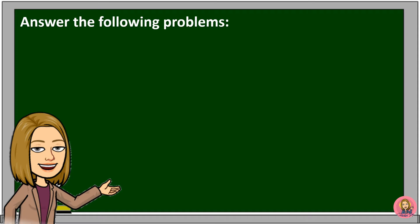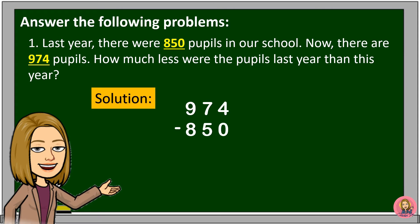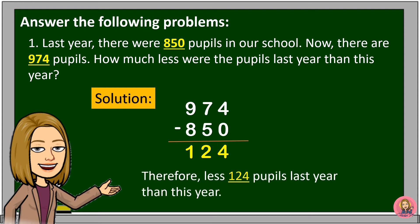Answer the following problems. Last year, there were 850 pupils in our school. Now, there are 974 pupils. How much less were the pupils last year than this year? Here's the solution: 974 minus 850. 4 minus 0 is equal to 4. 7 minus 5 is equal to 2. 9 minus 8 is equal to 1. Therefore, there were 124 fewer pupils last year than this year.